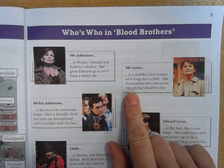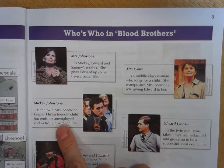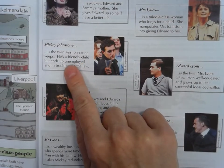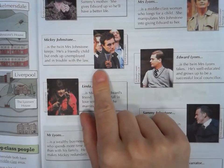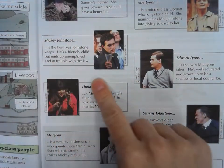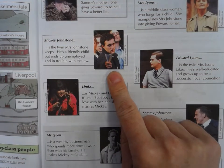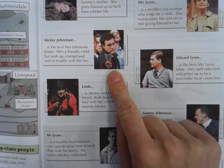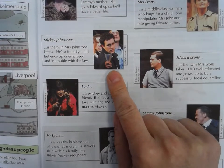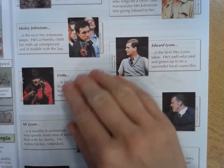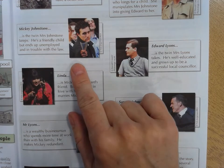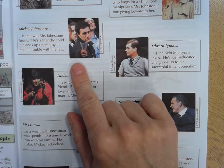Mickey Johnstone is one of the twins that Mrs. Johnstone keeps. He's a friendly child but ends up unemployed and in trouble with the law. Willy Russell's message is that because Mickey was working class, he was forced into a life of crime due to lack of job prospects. It all unravels back to his education and the different education systems that separated the working class from the middle class.